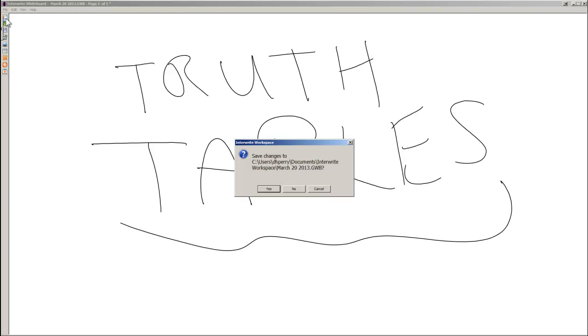Now we have actually already been seeing some truth tables but I've just not called them that. When I have sketched out some table showing the output of different gates with various inputs, that's really been a truth table.